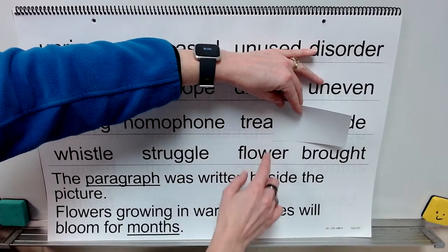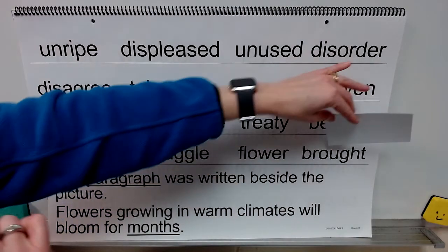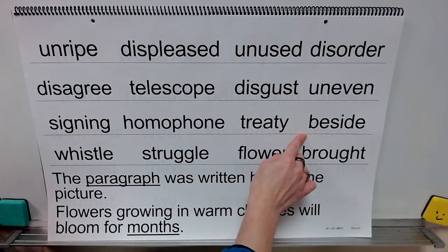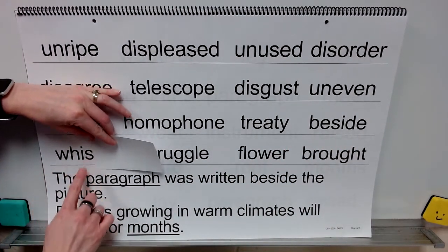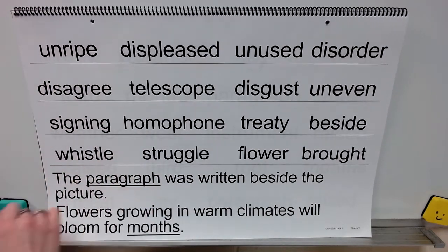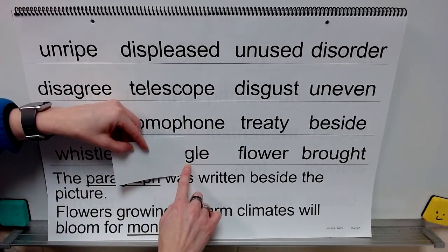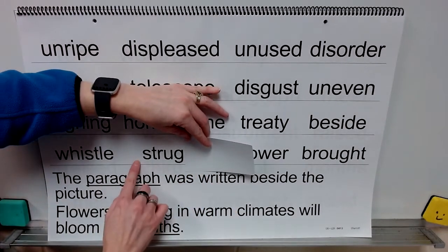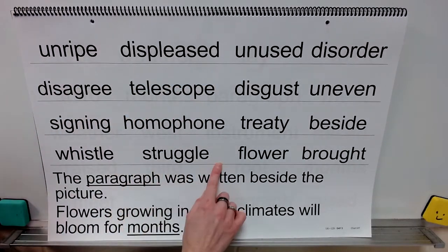Syllable: tree, syllable: tee, word: treaty. Syllable: be, syllable: side, word: beside. Syllable: whiss — this is silent — syllable: l, word: whistle. Syllable: strug, syllable: gle, word: struggle.